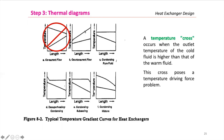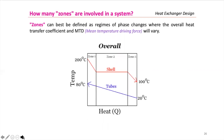We start from the cold end to the hot end, and what we want to avoid in these thermal diagrams are temperature crosses — because that occurs when the outlet temperature of the cold fluid is higher than that of the warm fluid. That means we are doing something really wrong, because this will pose a temperature driving force problem. All of the other cases are correct, and this is how a cross would look like.